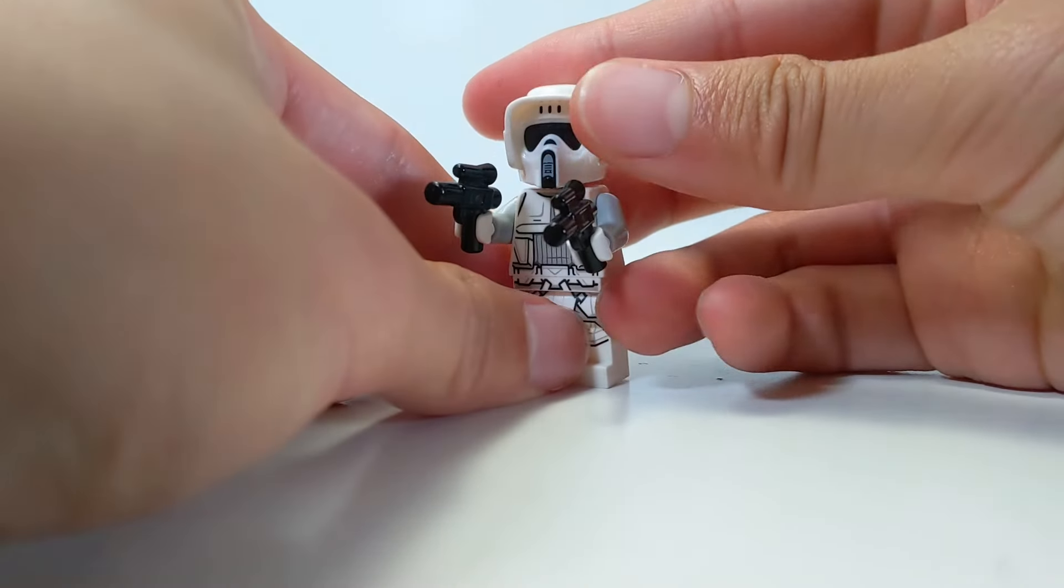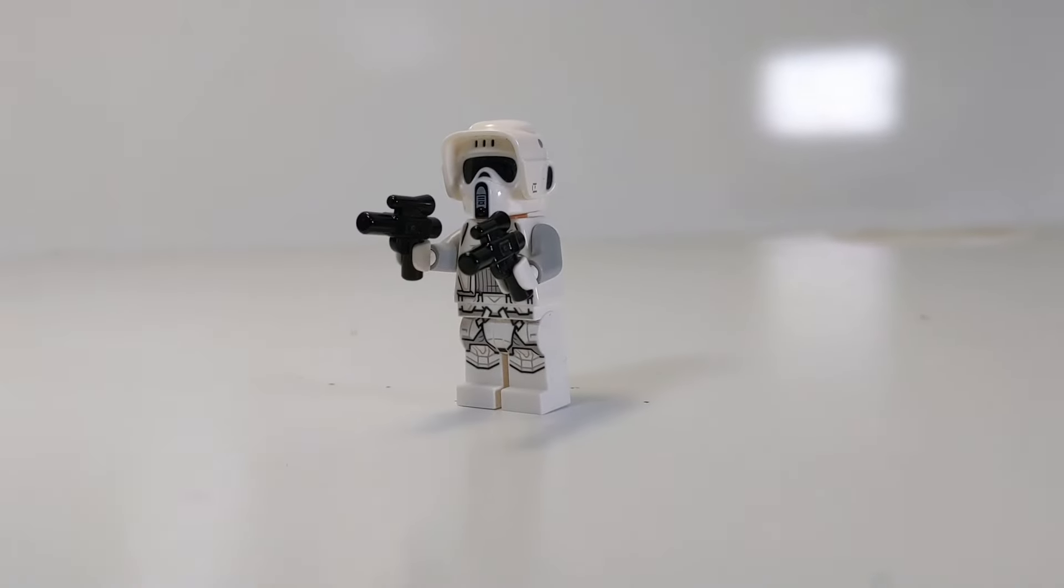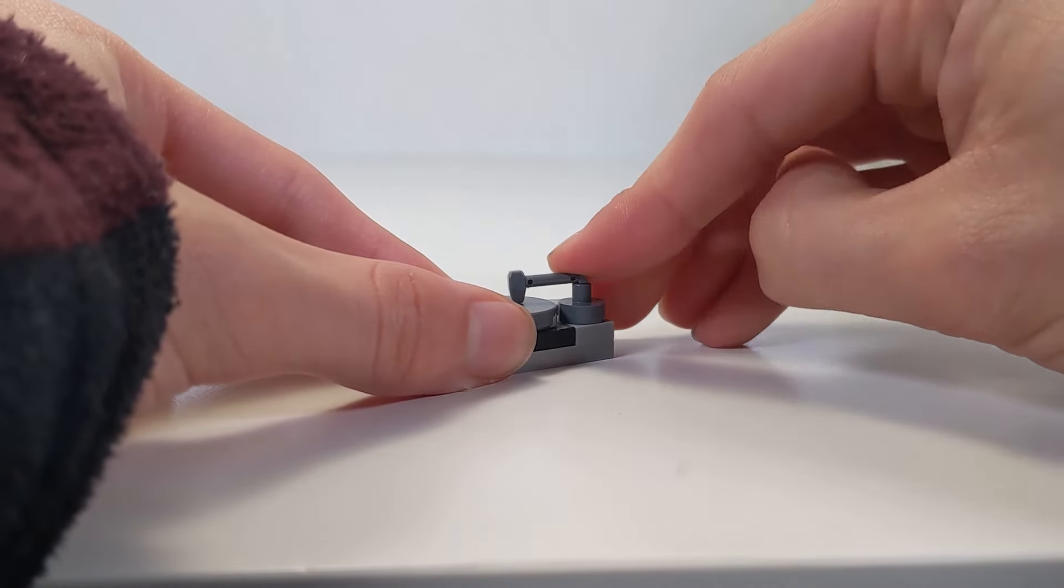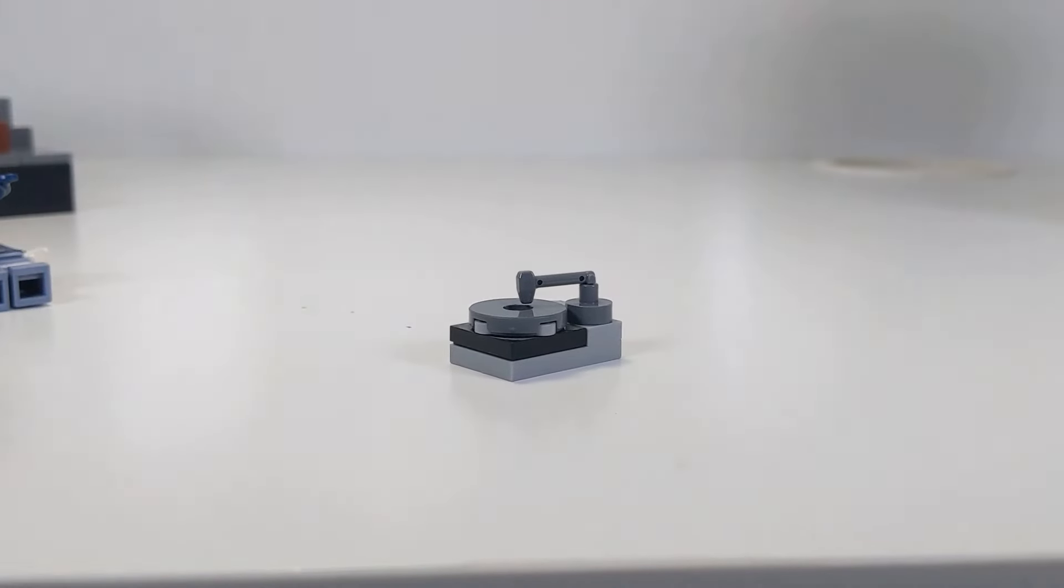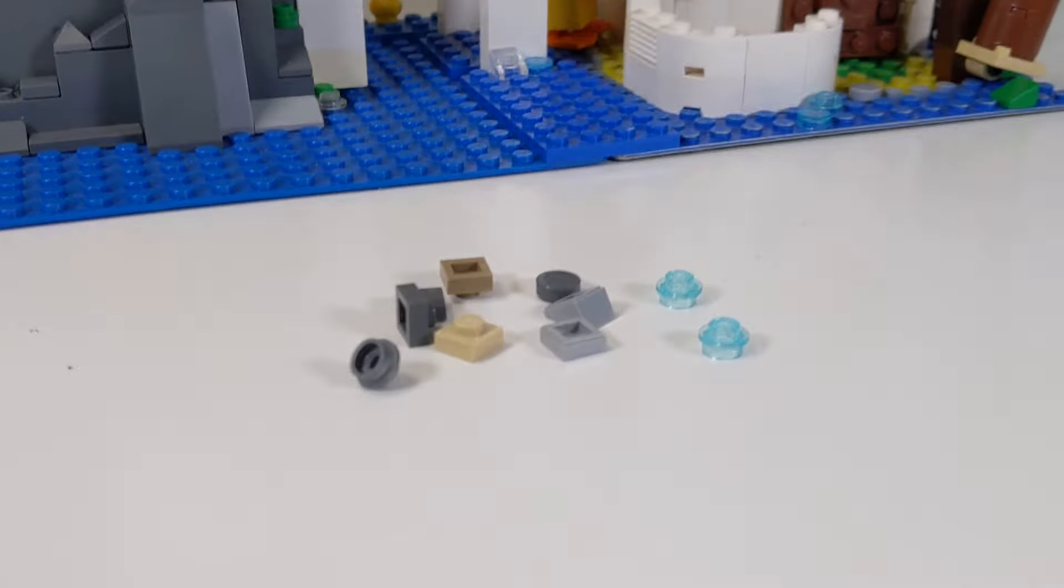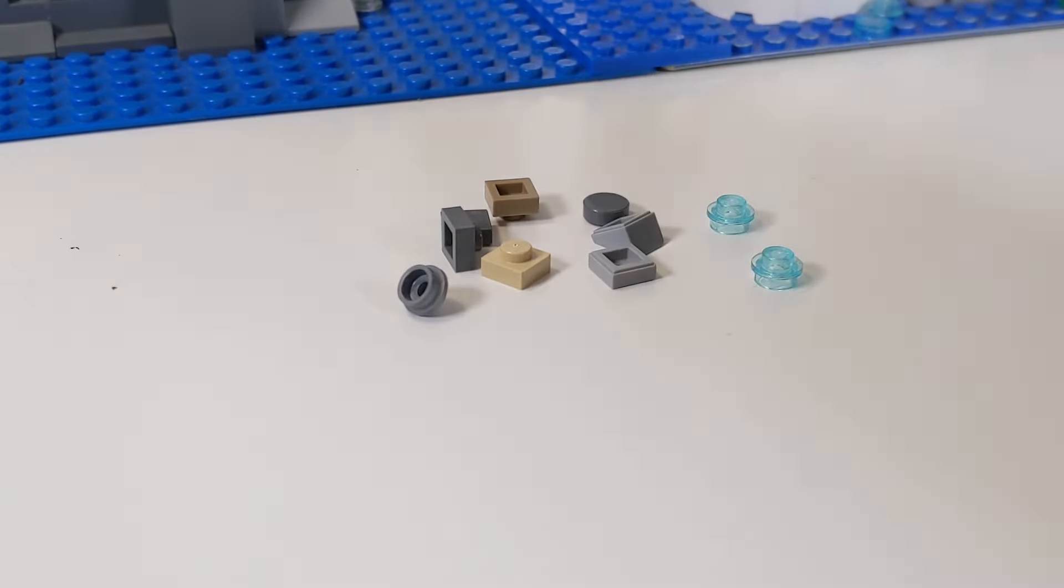Since there are new extra pieces that are included in LEGO Star Wars sets, you can also put a clone rangefinder on a modified one by one tile to create a vintage music player. With this same sub-assembly, you can make a door handle, or you can just use a stud or a tile.